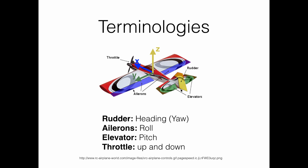On the other hand, the ailerons are the left and right surfaces in blue color that are used to control the rolling of the aircraft, that is the direction with respect to the x-axis. The elevators are the left and right surfaces in green color that are used to control the elevation of the aircraft, referred to as pitch, which is the orientation with respect to the y-axis.